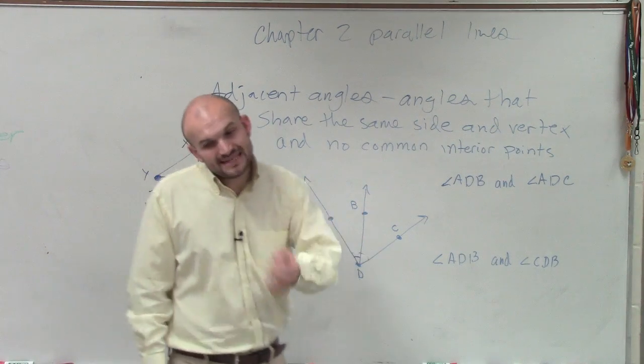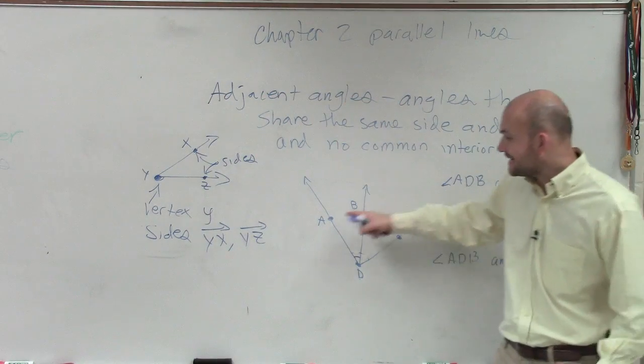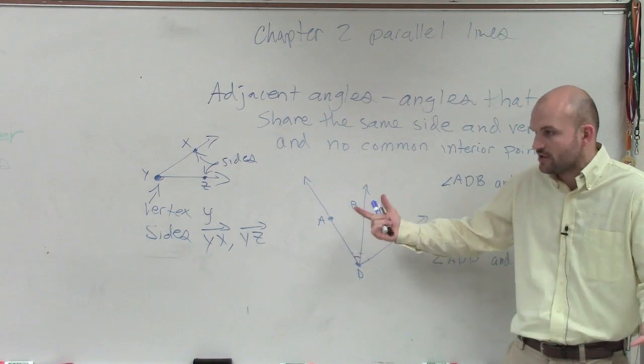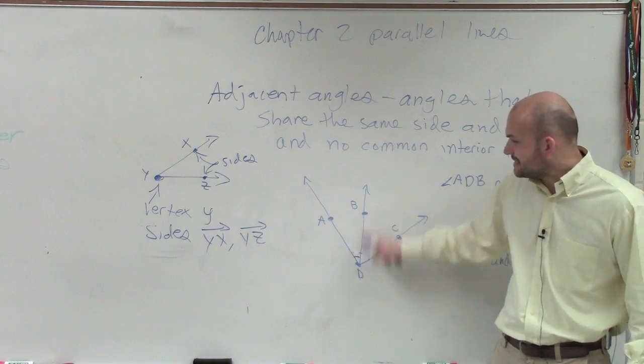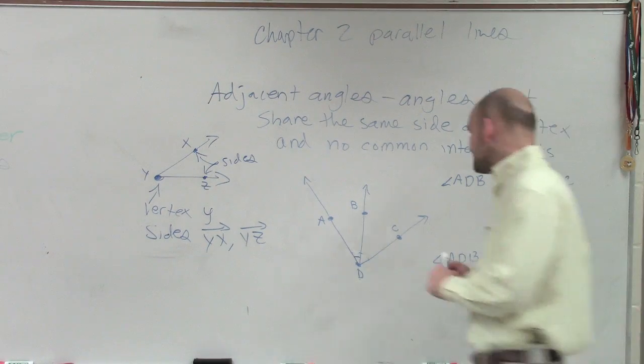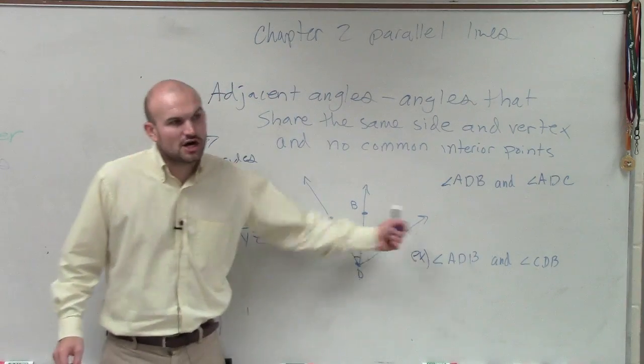B, though, well, B is not actually inside though. It's on the line that they share. So it's not inside this angle. ADB, B is not inside of it. It's a part of it. And CDB, B is a part of it as well. So therefore, since they don't share any common points, that is our example.